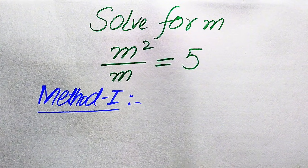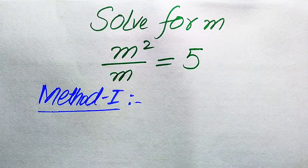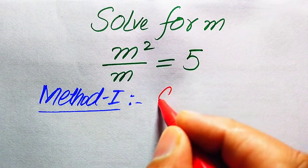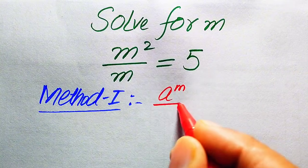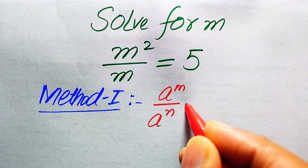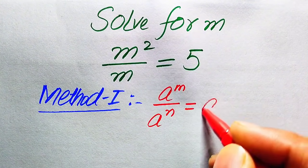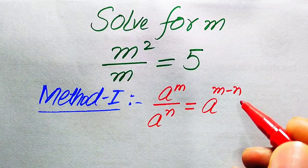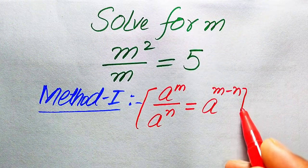In the first method, we use the exponential rule: a to the power of m divided by a to the power of n equals a to the power of m minus n.